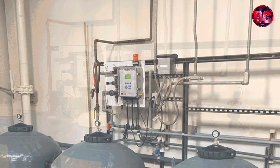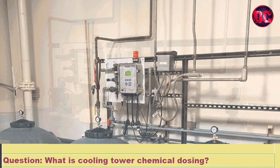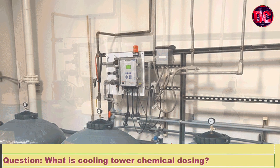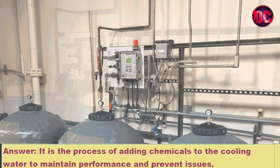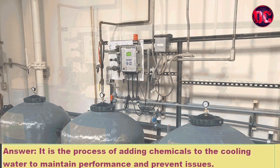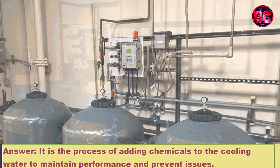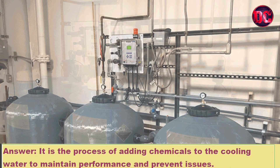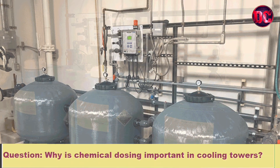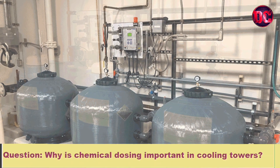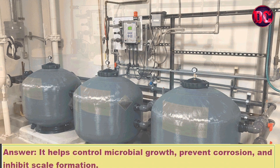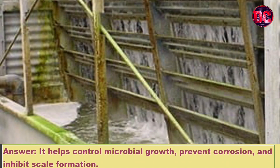Question: What is cooling tower chemical dosing? Answer: It is the process of adding chemicals to the cooling water to maintain performance and prevent issues. Question: Why is chemical dosing important in cooling towers? Answer: It helps control microbial growth, prevent corrosion, and inhibit scale formation.